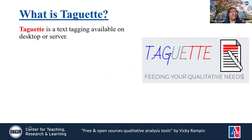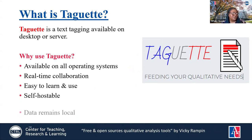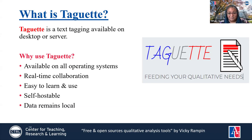So what is Tagat? Tagat is a text tagging tool available on a desktop or a server. Why do you want to use Tagat? Because it's available on all operating systems, it's real-time collaboration, it's easy to use, and it's self-hostable. You can download it onto your computer or use the URL. The data remains local, and it's multilingual.